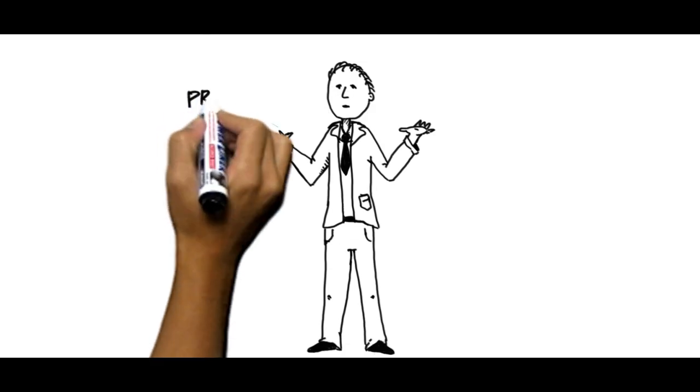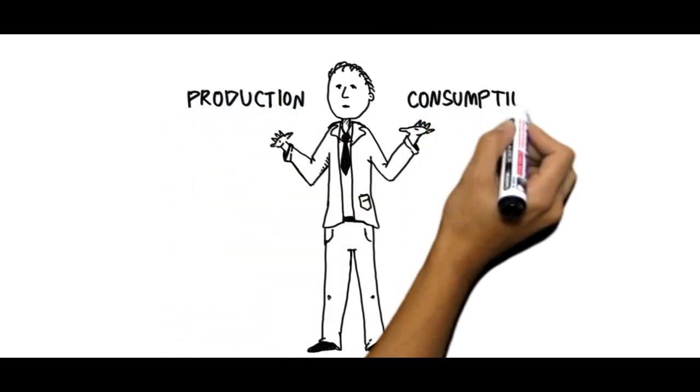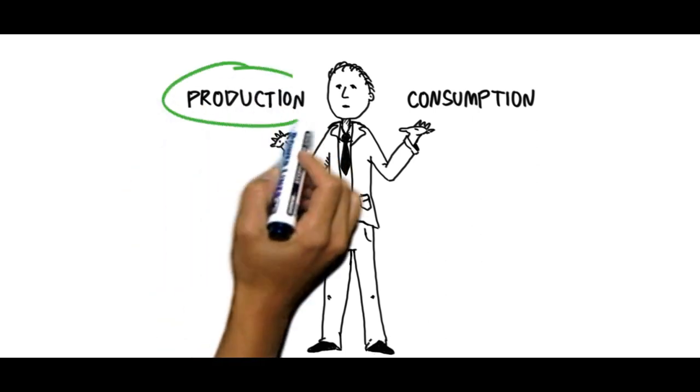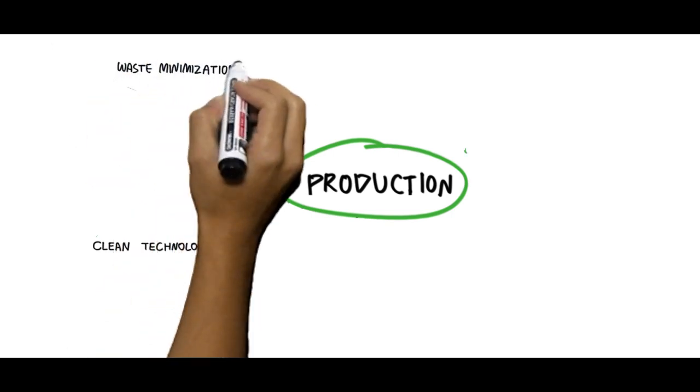This requires taking seriously both production and consumption patterns, but policies and actions taken to date have focused mainly on the production side, promoting, for example, cleaner production and technologies, waste minimization, recycling, and eco-design.